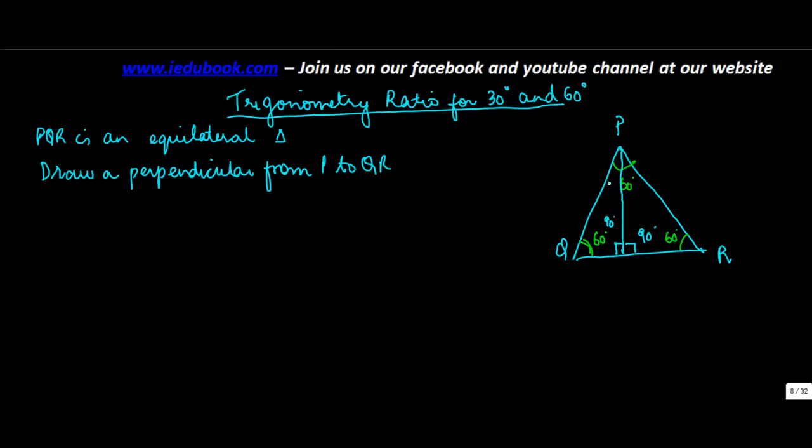Now if this is 90, then this has to be 30. Why? Because you have 60, you have 90, 150, so the third angle has to be 30 degrees. Similarly, this has to be again 30 degrees.